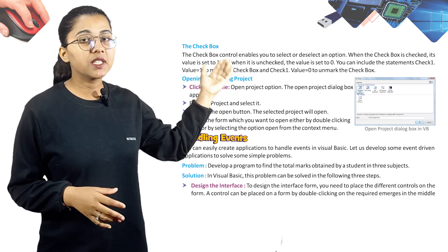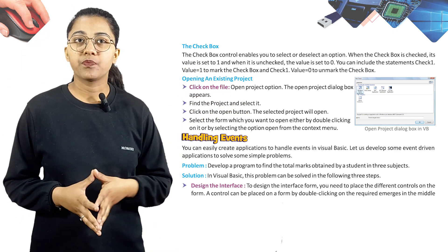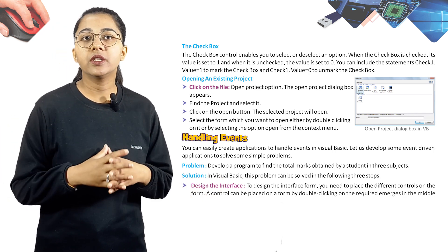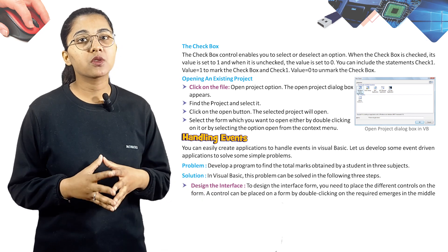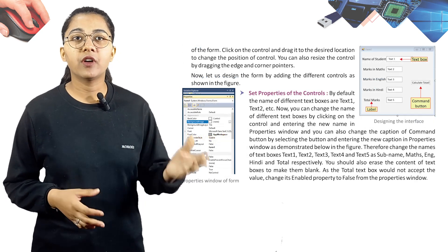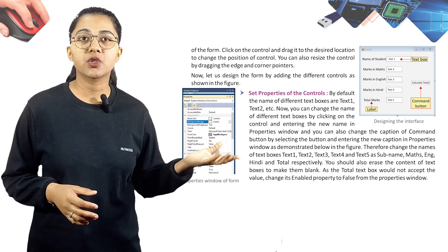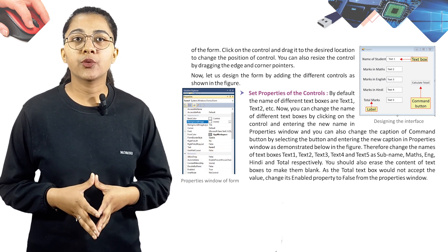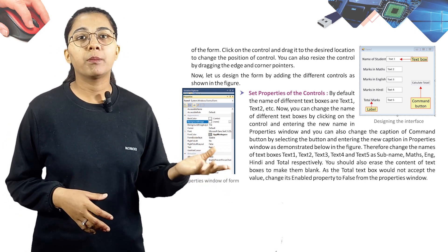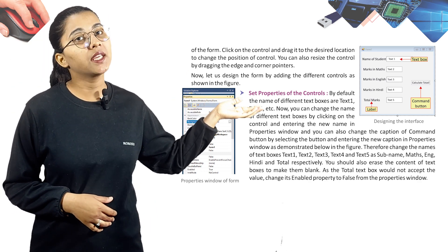Step 1: Design the Interface. To design the form, place different controls on the form. A control can be placed by double-clicking on the required control in the toolbox, or by clicking and dragging it to the desired location. You can also resize the control by dragging its edge and corner pointers. Design the form by adding the different controls as shown.